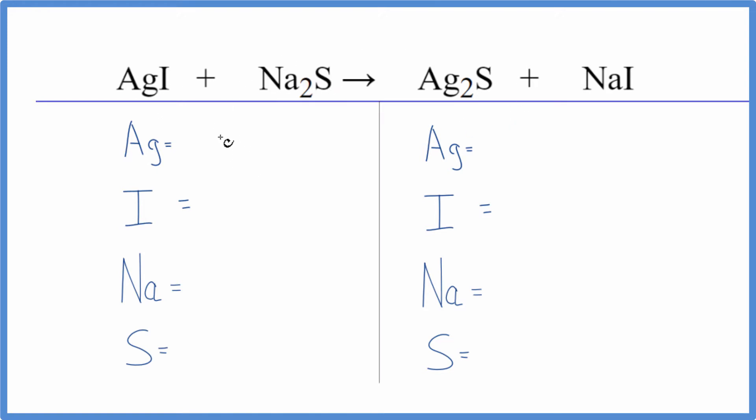Let's count the atoms up and balance the equation. We have one silver, one iodine, two sodium atoms, and one sulfur atom.